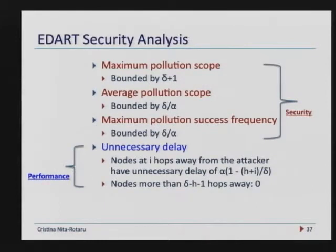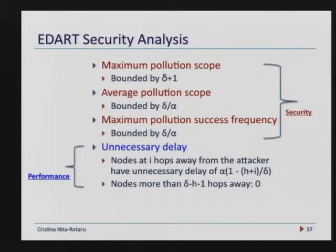There are two parameters we actually use in this system — this is where the system design comes in. We want good security but we don't want a lot of delay. It comes down to two parameters: one is how many hops I allow to delay, and another, which is alpha, is how I decide when to stop verifying. If you look at security in terms of how many packets and how long I allow this pollution to happen versus performance — which will be unnecessarily delayed — it comes down to manipulating these two numbers, alpha and rho. I can express everything based on these two parameters, allowing you to decide whether to be more aggressive on security and pay a slightly higher delay, or prioritize performance with the assumption that you'll have some polluted packets.